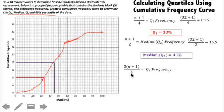For Q3, the formula is 3 times n plus 1 divided by 4. That gets us our Q3 frequency. So that's 3 times 32 plus 1 divided by 4, which is 24.75. I'm going to draw my line right here almost at 25. It hits the curve right here, which is associated with about a 56% as our Q3.